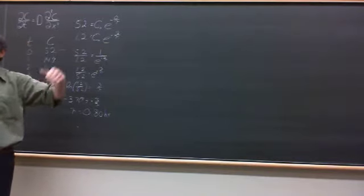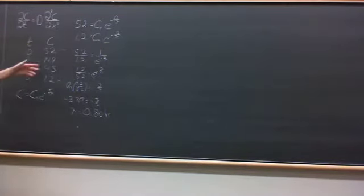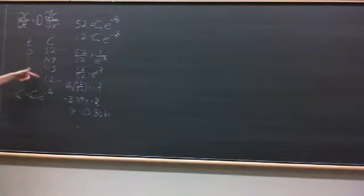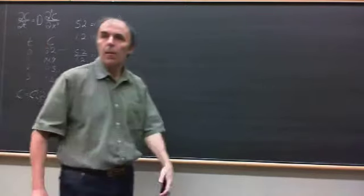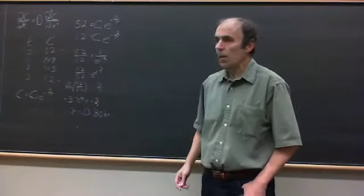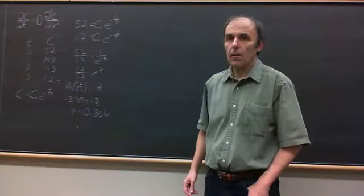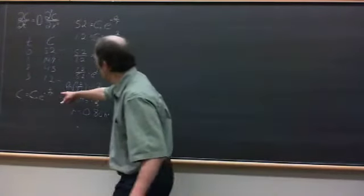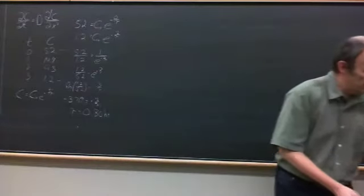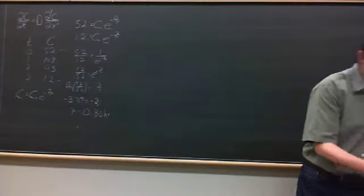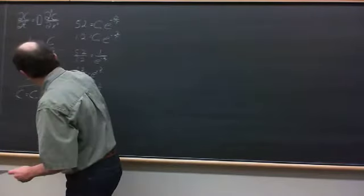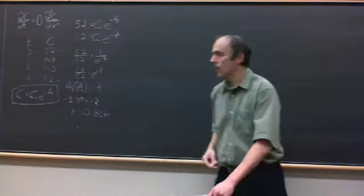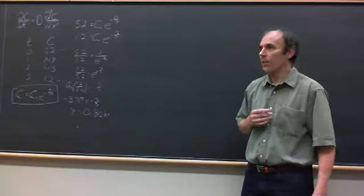A student asks whether the exponential equation will be given on the exam. Yes — the practice exam says 'assume a time dependence of C-naught times e to the minus t over tau,' so it will be given if it comes up. You aren't asked for C-naught, but it's easy: since data at t = 0 gives C = 52, C-naught equals 52.